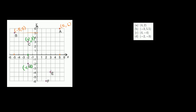E. The y-coordinate — we'll figure it out first, but you always have to write it second — it's negative 4. The x-coordinate is 3. And then finally F: the x-coordinate is 2 and the y-coordinate is negative 6. Hopefully that gives you a sense of figuring out the coordinates.